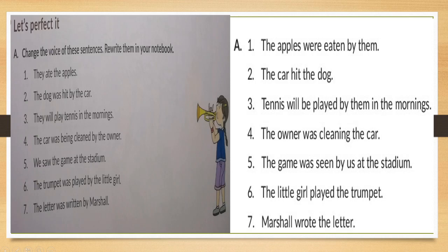This is your next — let's do the exercise given in your book. Here you have to change the voice of these sentences and rewrite them in your notebook. First: 'They ate the apples' — so the answer is 'The apples were eaten by them.' It's given in active voice and you have to change it to passive voice. Subject becomes object and object becomes subject. Second: 'The dog was hit by the car' — this is passive voice. Convert to active: 'The car hit the dog.'